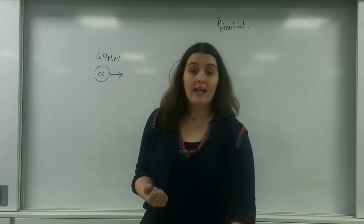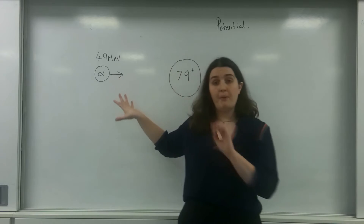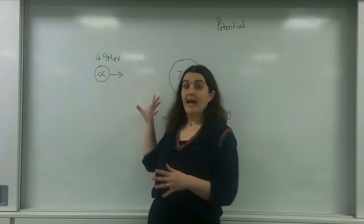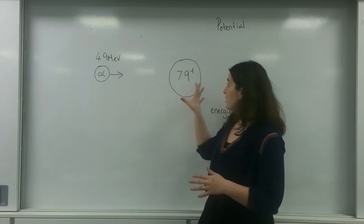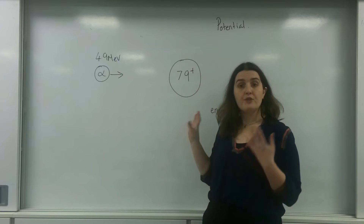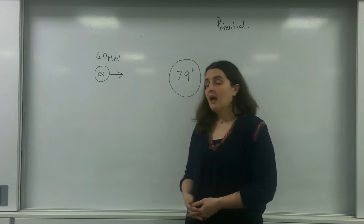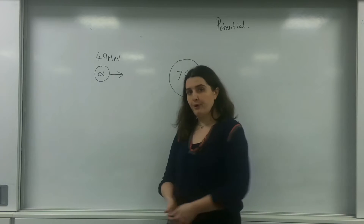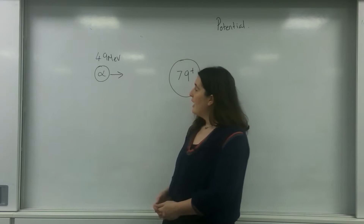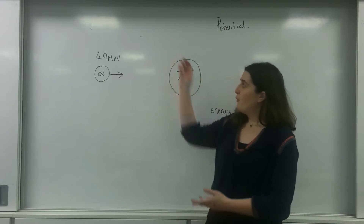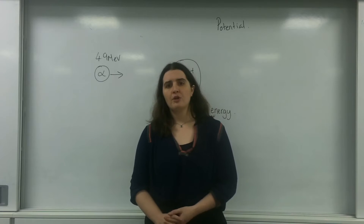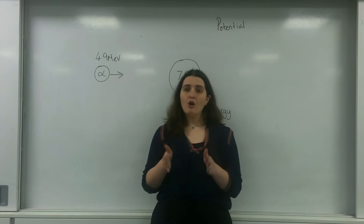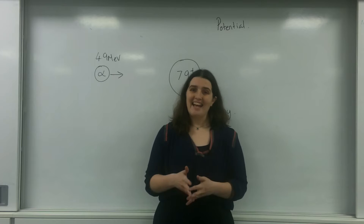What I've got here is an alpha particle being shot at the nucleus of a gold atom. I know it's gold because it has 79 protons in it. We have 4.9 mega electron volts of energy and I want to know how close it can get.